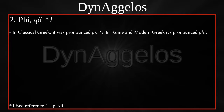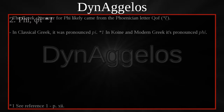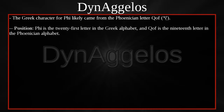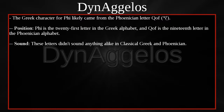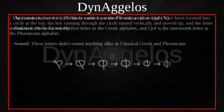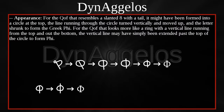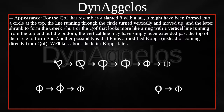PHI — in classical Greek it was pronounced P. The Greek character for PHI likely came from the Phoenician letter KOPH. PHI is the 21st letter in the Greek alphabet. These letters didn't sound anything alike in classical Greek and Phoenician. For the KOF that resembles a slanted eight with a tail, it might have been formed into a circle at the top, the line running through the circle turned vertically and moved up, and the letter shrunk to form the Greek phi. For the KOF that looks more like a ring with a vertical line running from the top and out the bottom, the vertical line may have simply been extended past the top of the circle to form phi. Another possibility is that phi is a modified KOPA, instead of coming directly from KOF. We'll talk about the letter KOPA later.